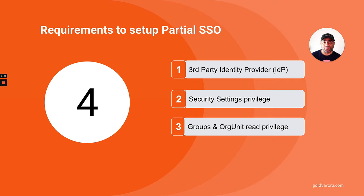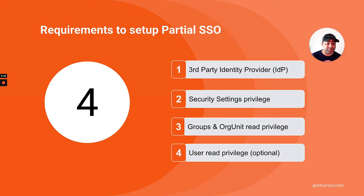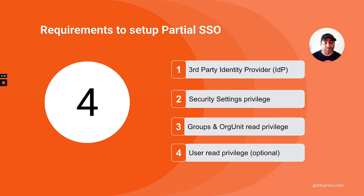With OrgUnit read privilege, you can apply settings to organizational units. Without Groups read-only permission, you won't be able to see groups during configuration, so you can only apply the policy to OrgUnits. The User read privilege is optional — you can't apply the Partial SSO policy to an individual user, but with that privilege you can enter a user's email address on the configuration screen to look up which profile — Google authentication or third-party IdP — is assigned to that specific user.